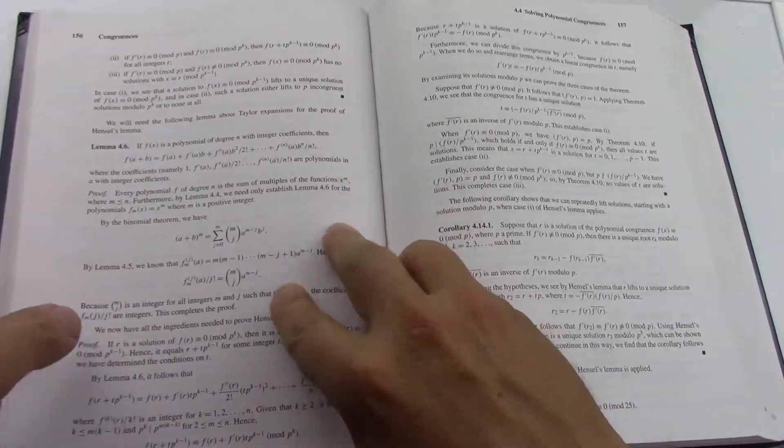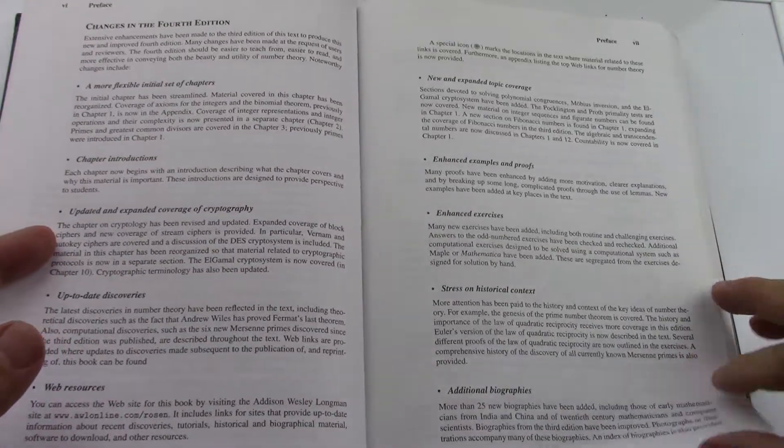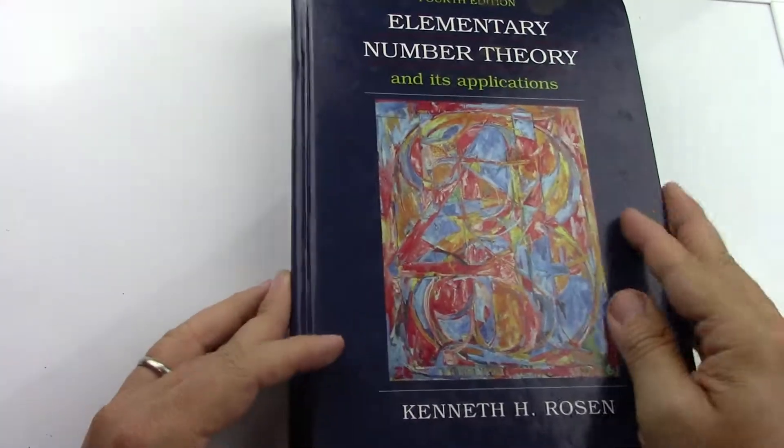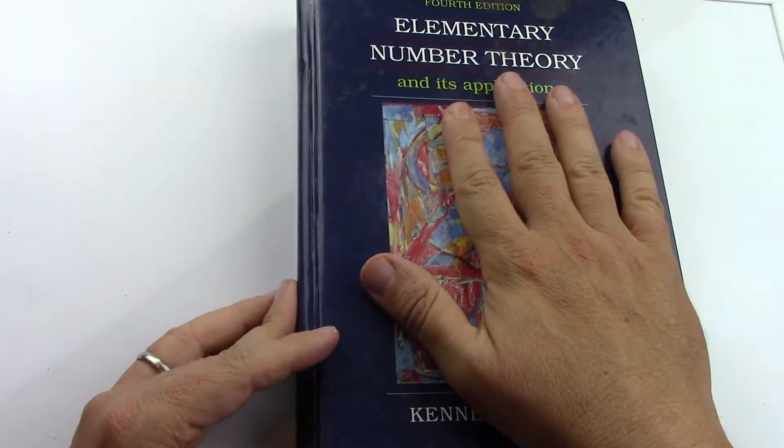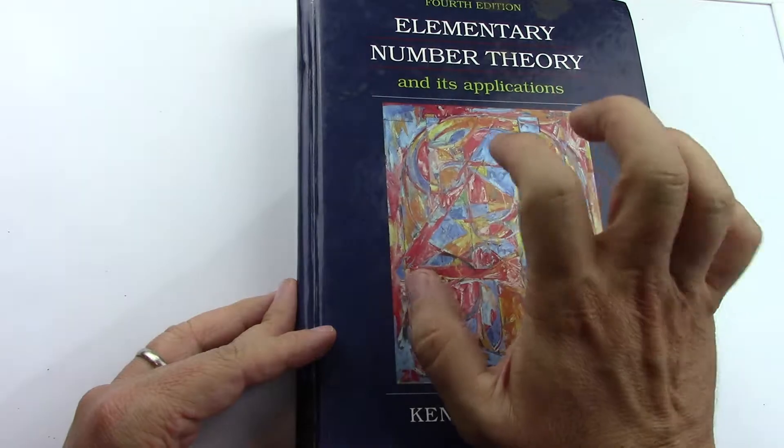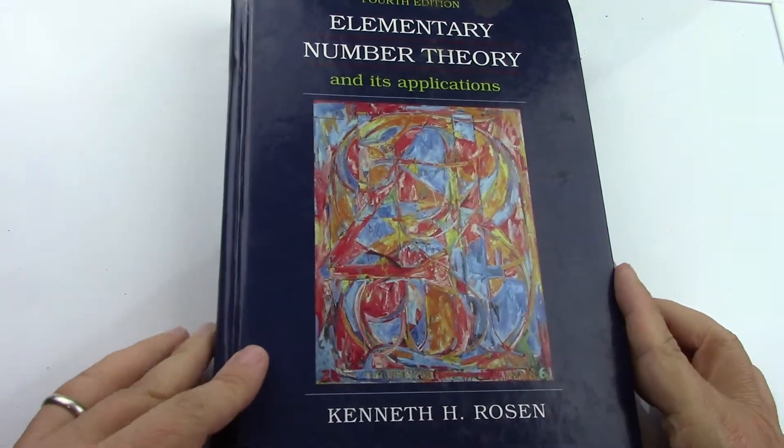I just wanted to have this video to show you fine folks of the interwebs the three books that I'm using. I'm using Rosen for number theory, I'm using the Hammack book for proofs, and Thomas and Finney, which is a classic, for calculus.